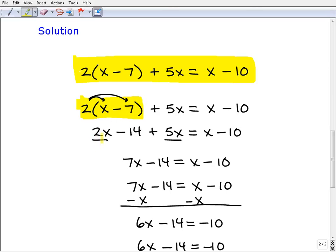So you can see we're distributing the 2 to the x and the negative 7, so that gives us 2x minus 14. Then we're just rewriting the rest of the problem: plus 5x equals x minus 10. Okay, so now we have rewritten the equation to this point.